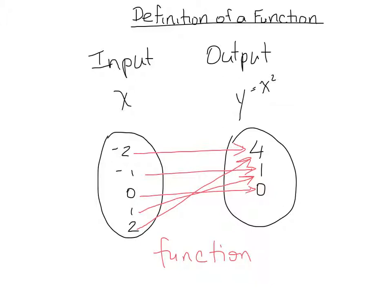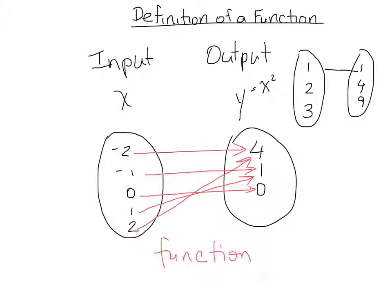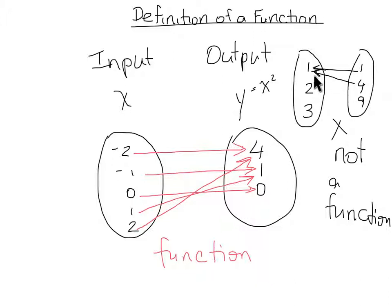However, if it were the other way around — if my input values were 1, 2, and 3, and my output values were 1, 4, and 9, and let's say 1 went to 1 and 4 also went to 1 — then this would not be a function. For it to be a function, x can't have more than one y value coming to it.